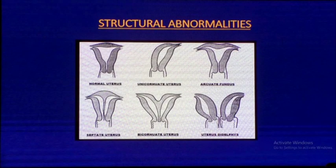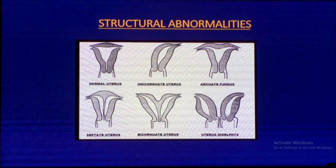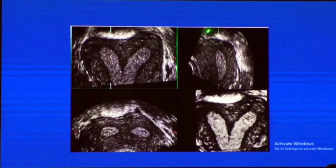Structural abnormalities of the uterus can be identified by transvaginal ultrasound. In patients with repeated abortions, the uterus should be interrogated for structural anomalies — it may be septate, bicornuate, or didelphys, all of which can lead to repeated abortions. 3D or 4D ultrasound is best for evaluating these structural abnormalities such as septate and didelphys uterus.